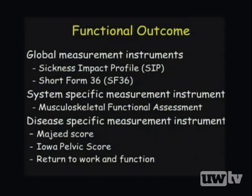Outcomes can be measured using several instruments. Global measurement instruments include the Sickness Impact Profile and the SF-36. Disease-specific measurements include the Majeed score and Iowa Pelvic Score. Simpler measures include asking patients whether they have returned to work and how they are functioning at home.